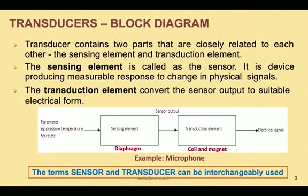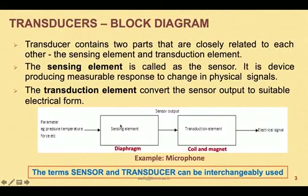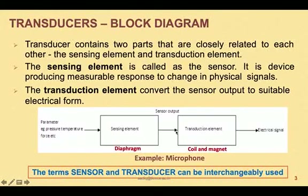Transducers contain two parts that are closely related to each other: the sensing element and a transduction element. The sensing element is called a sensor — it is a device that produces a measurable response to a change in a physical signal. The transduction element converts the output signal from the sensor into a suitable electrical signal.